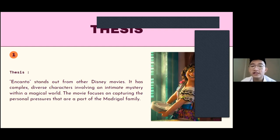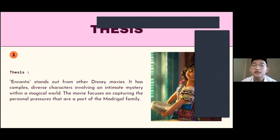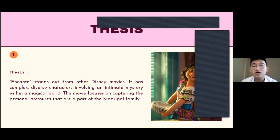Encanto stands out from other Disney movies with its complex, diverse characters involving an intimate mystery within a magical world. The movie focuses on the personal pressure that is part of the Madrigal family — kids struggle with the pressure to meet expectations. Mirabel is an outcast for not having powers while her relatives must use their powers for the good of the family. There is a crushing weight on their shoulders to make Abuela, the grandmother, proud — and constant pressure to be good enough. Mirabel is trying to free her family from the overwhelming pressure to be perfect and dependable all the time.